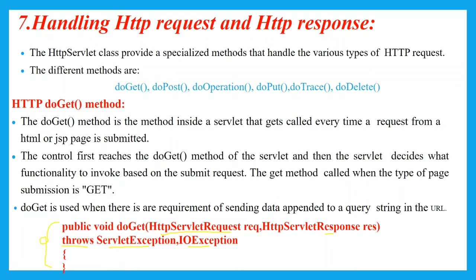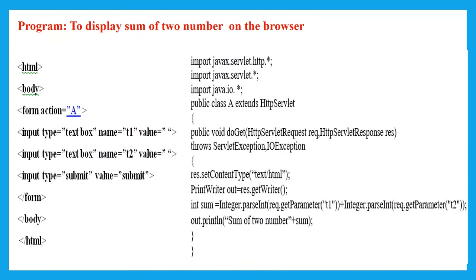DoGet is used when the type of form submission is Get. Here is a simple program to display the sum of two numbers on the browser, where the values are passed by the client using the DoGet method. Two files are created: one is a web page using HTML, and the other is the servlet file to perform the operation.